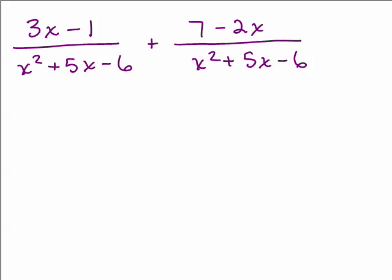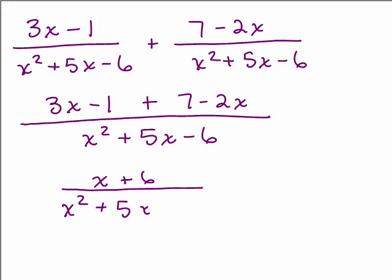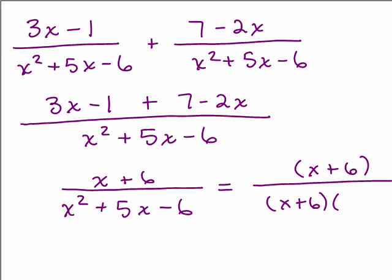Here's one last example — put it on pause, try it, then come back. We have a common denominator, so write it down once and add the numerators: 3x minus 1 plus 7 minus 2x. Adding like terms: 3x minus 2x is x, and negative 1 plus 7 is plus 6, giving x plus 6 over x squared plus 5x minus 6. Guessing x plus 6 is a factor: using x and negative 1, that works — so cancel x plus 6, and the answer is 1 over x minus 1.